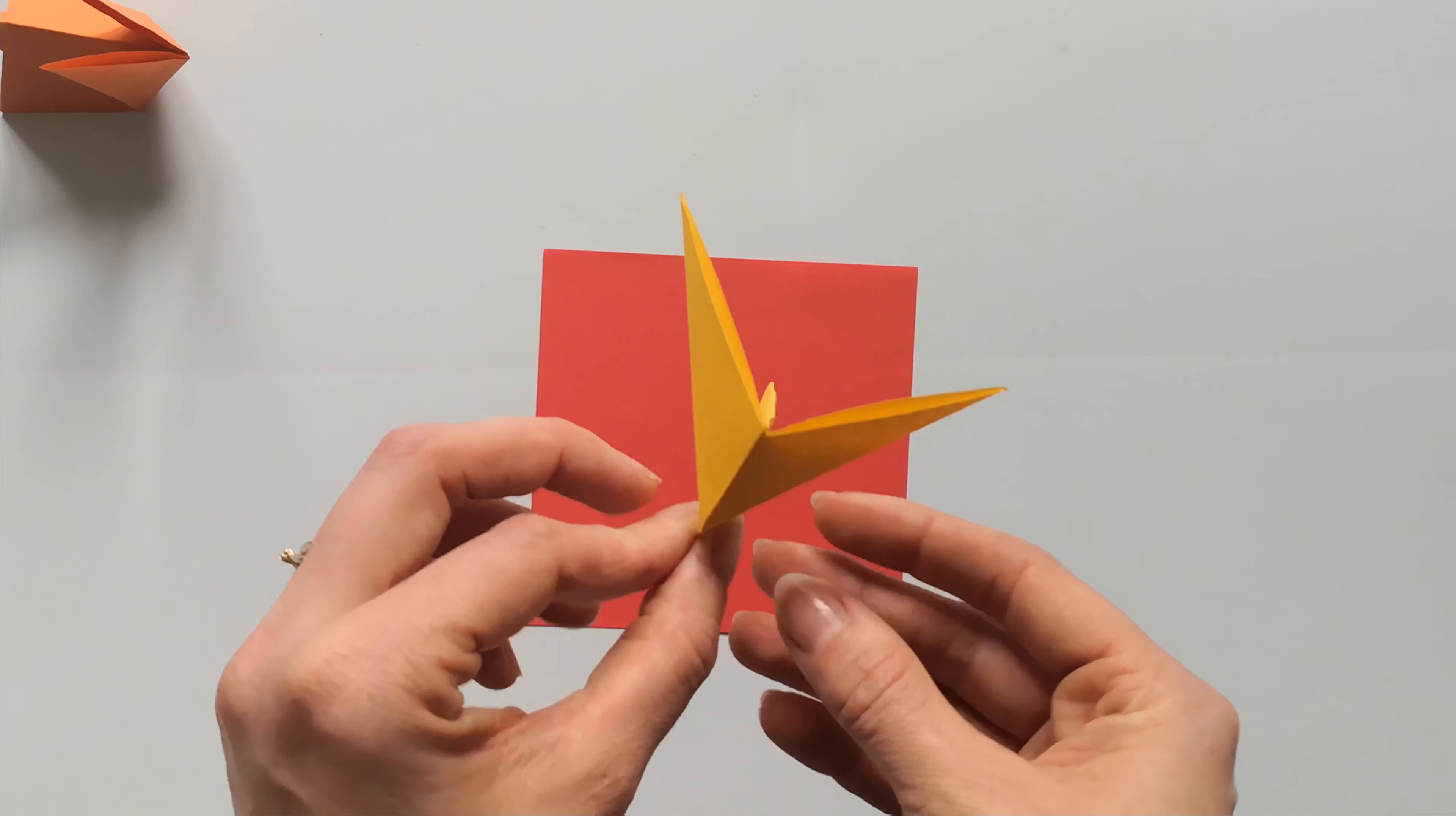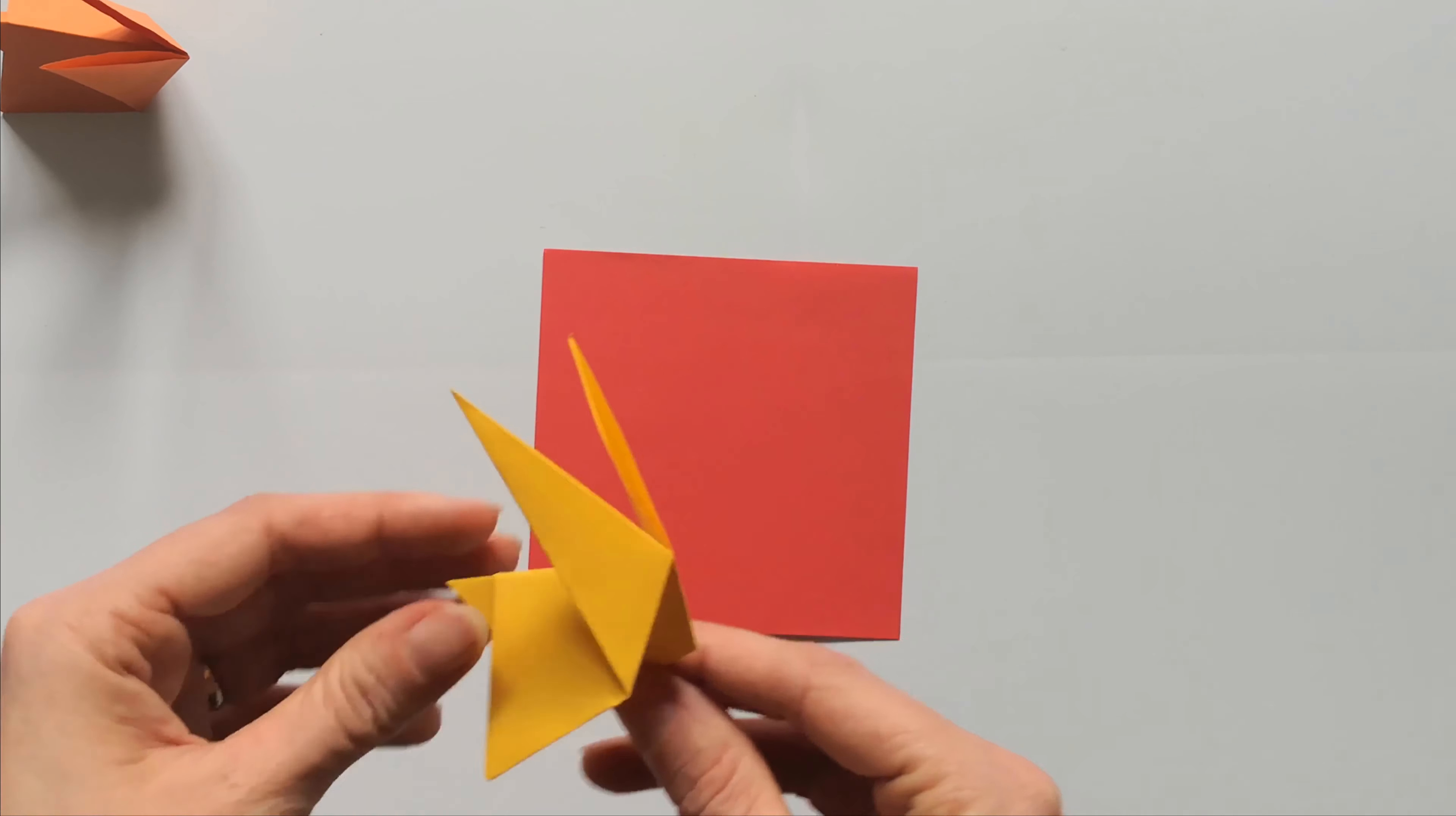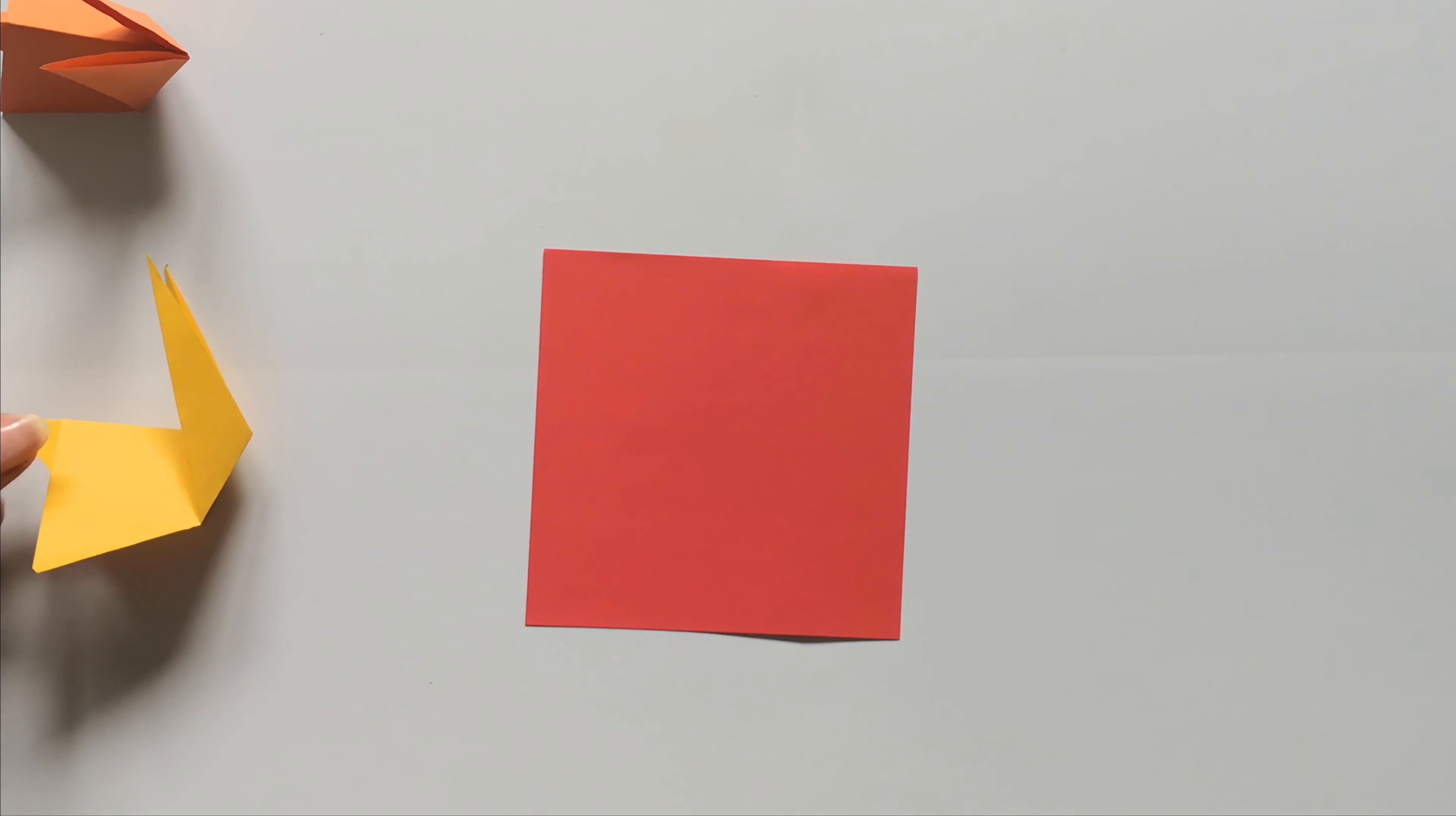Let's make this simple origami bunny together. All you're gonna need for it is a square piece of paper and scissors.